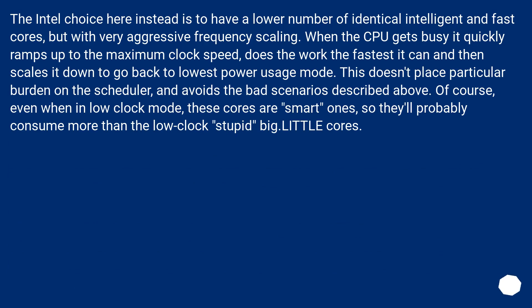The Intel choice instead is to have a lower number of identical, intelligent, and fast cores, but with very aggressive frequency scaling. When the CPU gets busy it quickly ramps up to the maximum clock speed, does the work as fast as it can, and then scales down to go back to the lowest power usage mode. This doesn't place particular burden on the scheduler and avoids the bad scenarios described above. Of course, even when in low clock mode, these cores are smart ones, so they'll probably consume more than the low-clock cores in big.LITTLE.